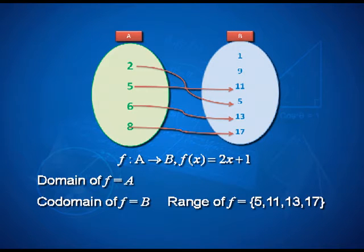In this arrow diagram, we have an association represented between elements of set A and set B. Does this arrow diagram represent a function? Yes, definitely — you can see that each element of set A has only one image in set B. The association can be expressed as f is a function from set A to B, and the image is twice the element in set A plus 1. So 2 times 2 plus 1 gives 5, 2 times 5 plus 1 gives 11, and so on. We can express this as f(x) = 2x + 1.